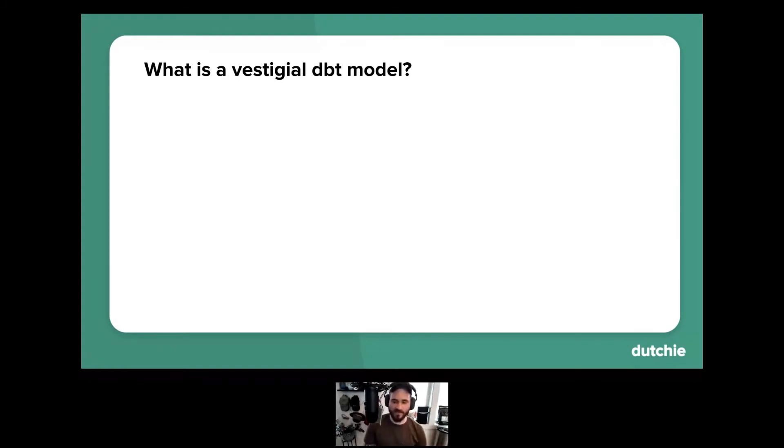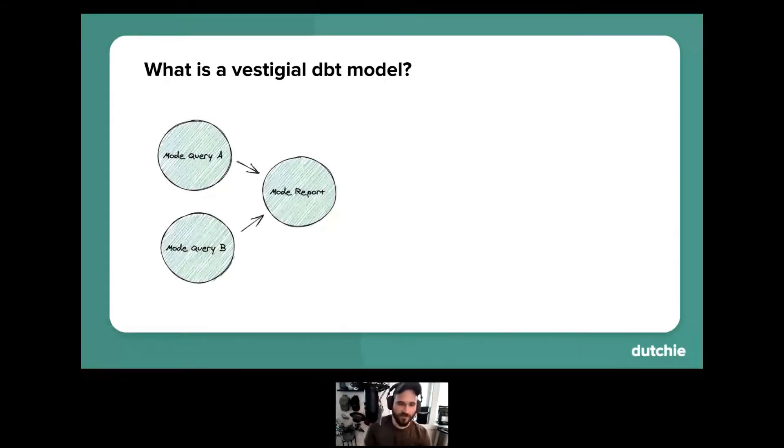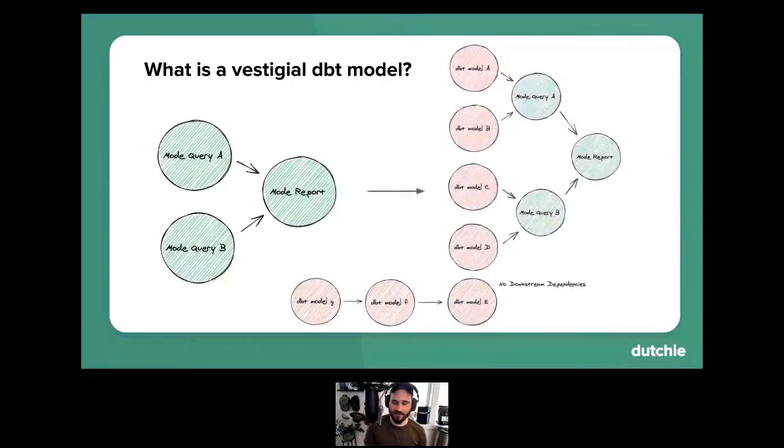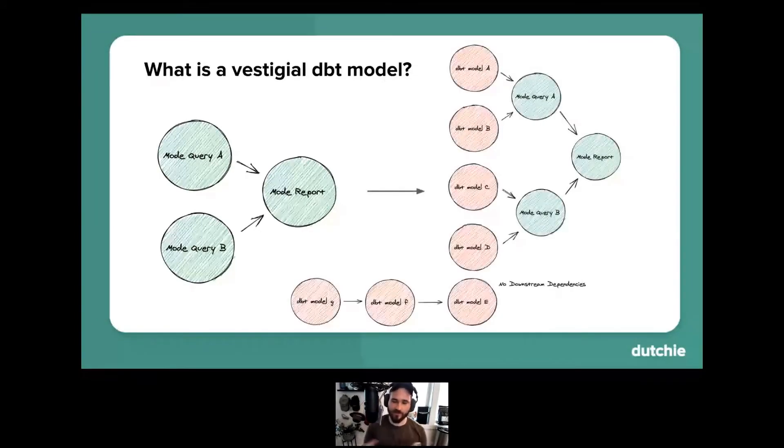So you can see here, I've created an example DAG with nodes here for a mode report that contains multiple queries. Each of the mode query nodes in this graph has metadata attached to it that contains the underlying SQL powering that query. And then once we had that metadata, we could scan the query metadata and we could find implicit references to DBT models within the metadata. We then took the existing DAG that DBT automatically constructs under the hood and we actually extended this graph horizontally by creating edges between DBT models and mode queries that implicitly reference those DBT models.